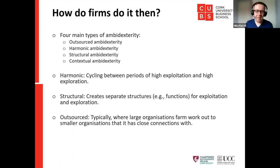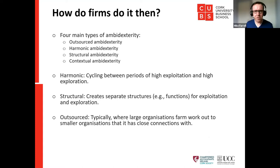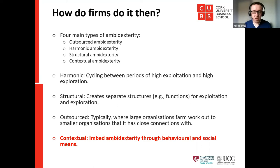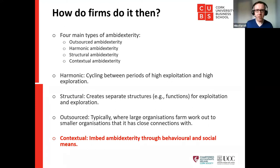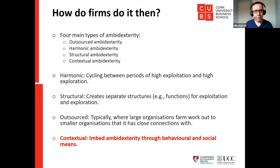Outsourced ambidexterity is where large organisations farm out work to smaller organisations they have close connections with. That works if you're a large powerhouse, but many organisations don't have the resources or power to do that. What I'm most interested in is contextual ambidexterity — achieving ambidexterity through behavioural and social means. What I like about it is you can apply it at any level: your organisation, your business unit, your function, your team, or even yourself. It's a mindset shift.